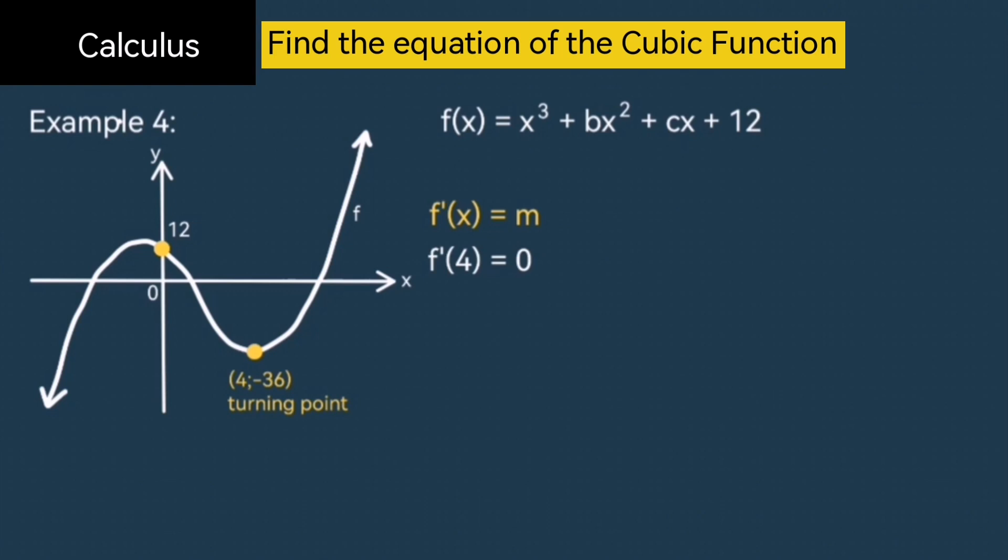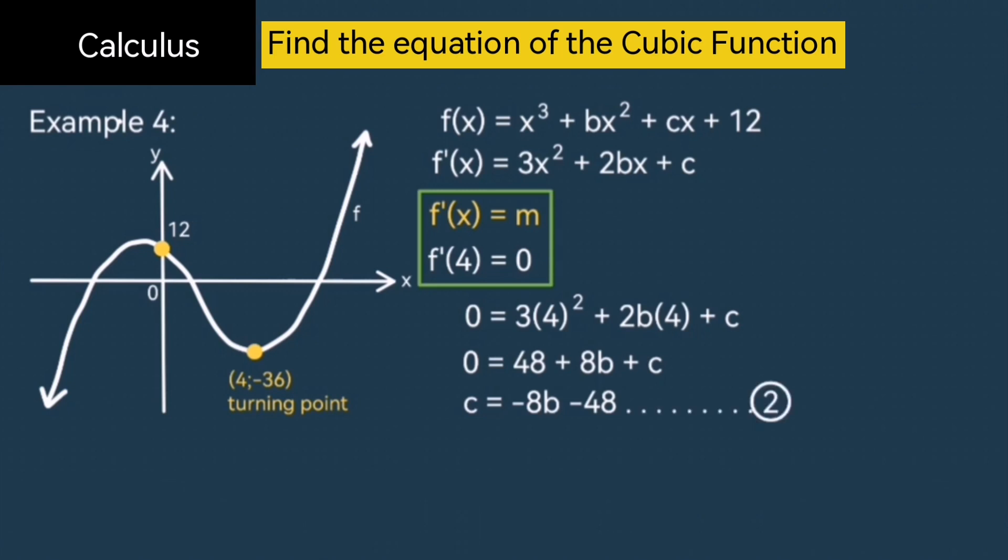First, I'm going to find the derivative, the derivative of the original function. So that is 3x squared plus 2bx plus c equal to m, the gradient. And since I know my gradient is 0 where x is 4, I'm going to substitute x with 4 and the gradient with 0. Now let me simplify this equation. 3 times 4 squared is 48. 2b times 4 is 8b plus c equal to 0. Make c again the subject of the formula. So we end up with c equal to negative 8b minus 48. This is your second equation.